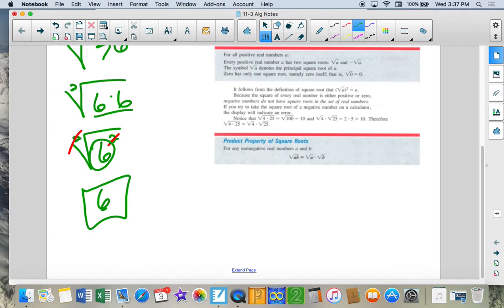Much like addition cancels out subtraction, subtraction cancels out addition, multiplication cancels division, division cancels multiplication. Squares cancel out square roots, and square roots cancel out squares.